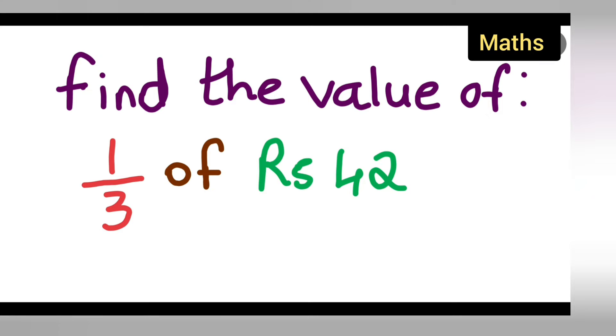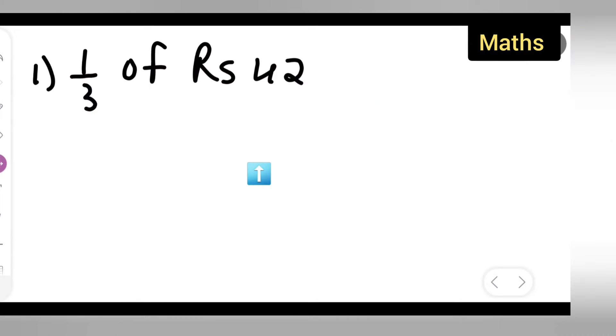Welcome to today's class of mathematics. Today's question is taken from class 7 mathematics from the fraction and decimal chapter. The question is: find the value of 1 upon 3 of rupees 42. Of means we are going to multiply this.